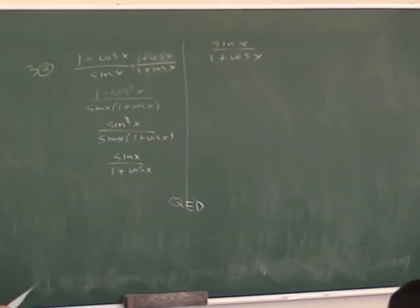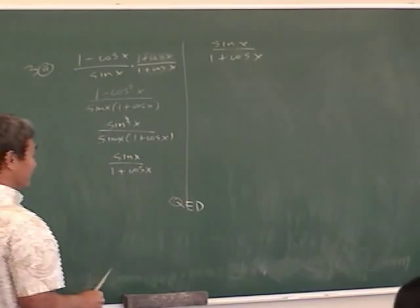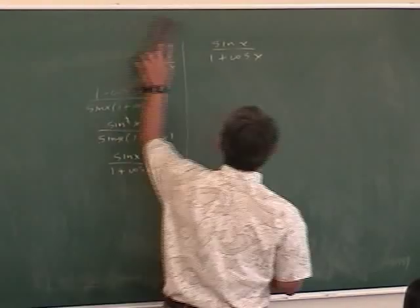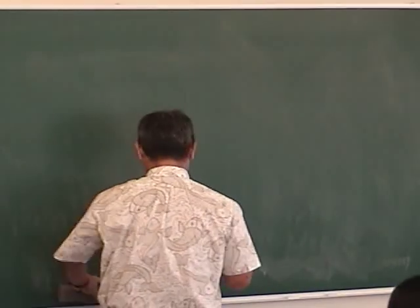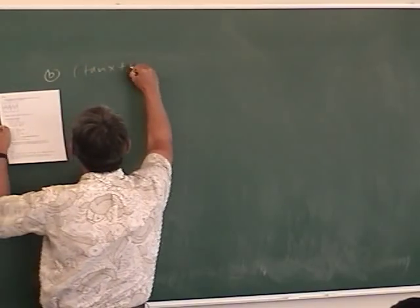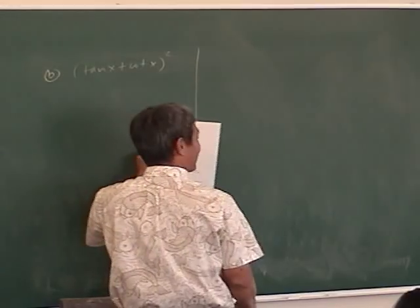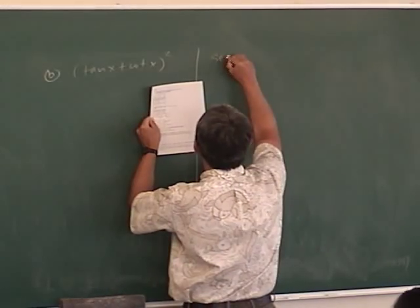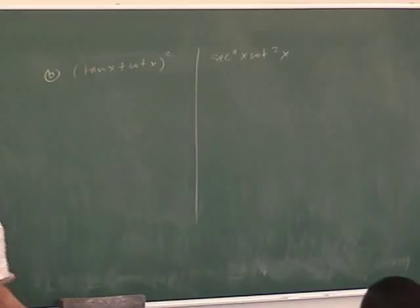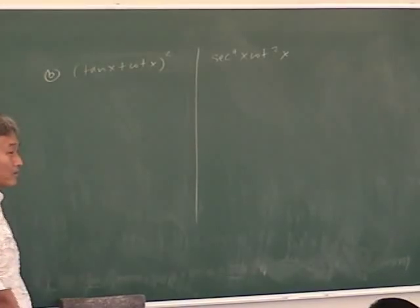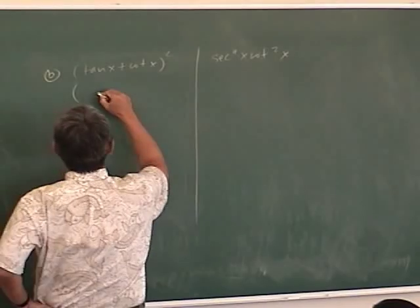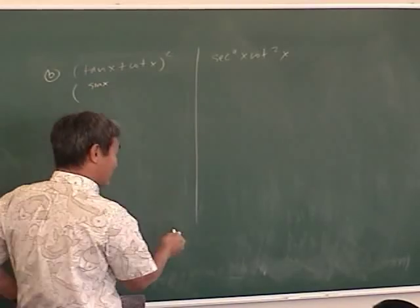Remember this technique — you might see it on the test. If you get stuck, multiply by the conjugate because maybe something good might happen. Next proof: part B. You've got tangent x plus cotangent x. Remember, there are an infinite number of ways to do proofs — as long as you do them correctly you'll be okay. Do you want to change everything to sines and cosines?